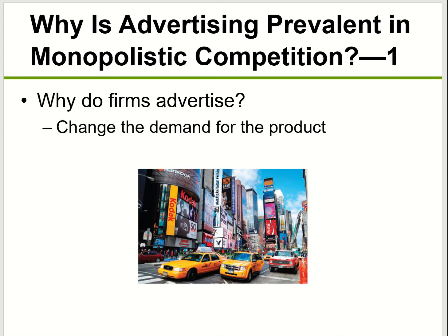So what do companies do to survive in monopolistic competition? The key is to advertise. That's why you see all the beer commercials, pizza commercials, and clothing commercials — because those companies try to distinguish their product and make consumers think their product is different from others, so they can charge a higher price. Companies advertise heavily to change the demand for their product. The more you advertise, the more customer loyalty you build, and consumers tend to pay a higher price.